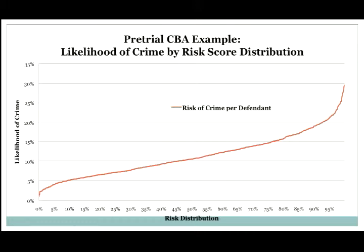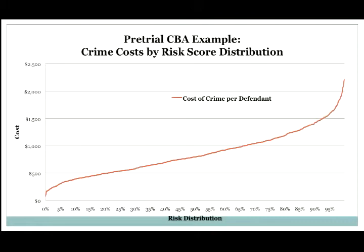What cost-benefit analysis can do is take a graph like this and translate it into dollars and cents. Really the only thing that's changed is the axis — instead of looking at the likelihood of committing a crime while out, we're looking at the expected dollar value of those crimes. The least-risky individuals might be expected to cost around $50 in damage to victims and taxpayer costs. The most risky individuals — you can see the graph really starts to take off — maybe $2,200 worth of damage expected from those very few high-risk individuals.